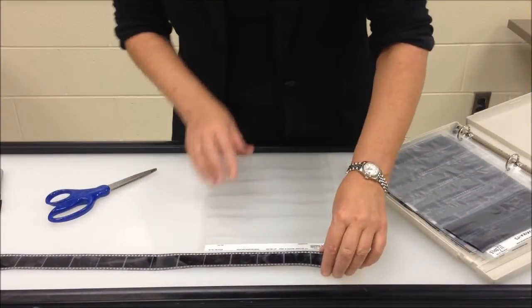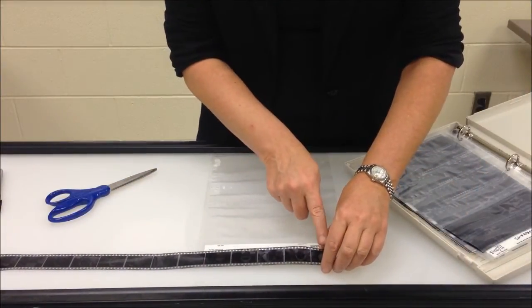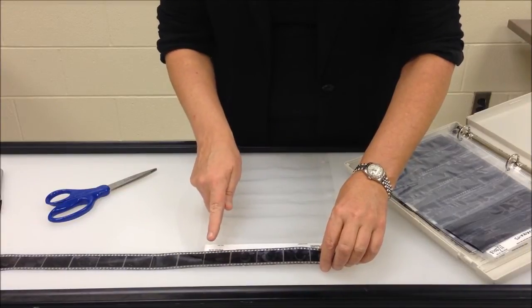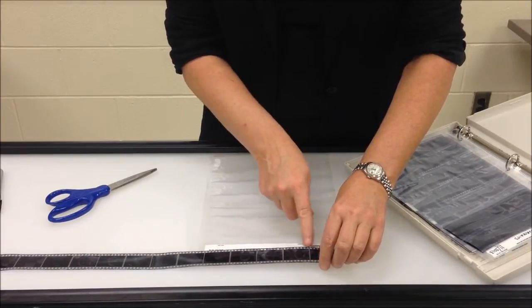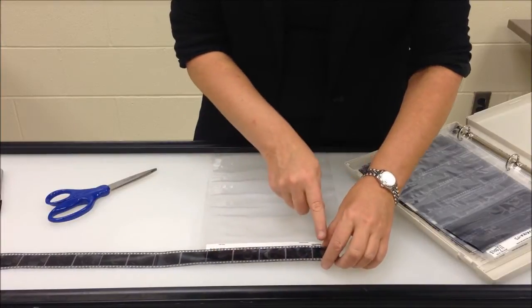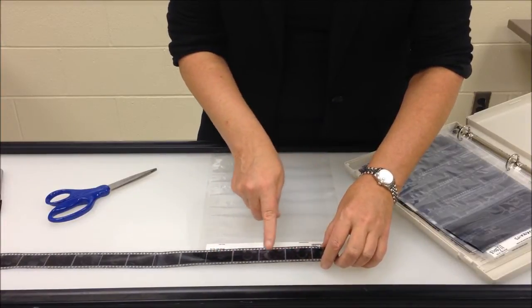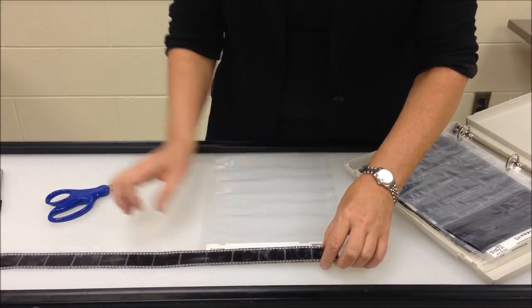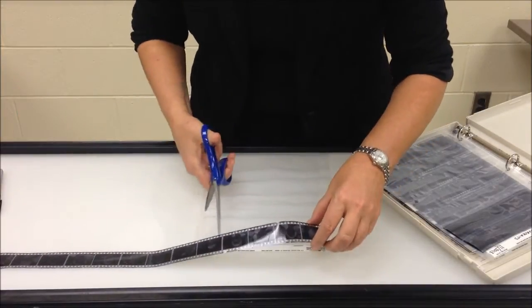For this particular film sleeve, we can cut the film in strips of five frames on this 36 exposure roll. So I'm going to count one, two, three, four, five, and then cut in between these two frames over the light table.